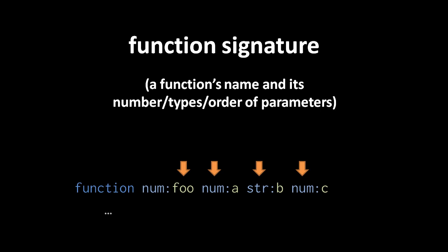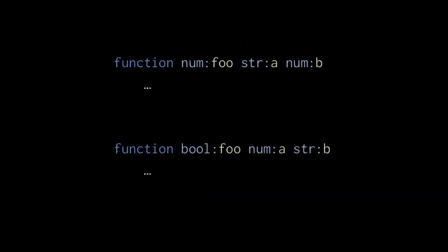Obviously then, we can't have multiple functions with the same signature, because then the compiler interpreter wouldn't be able to distinguish between calls to those functions. Notice that we said a function's order of its parameter types is part of its signature. What this means is we can have functions with signatures that only differ by the order of their types. For instance, a function foo with a string parameter followed by a number parameter has a different signature than a function foo with a number parameter followed by a string parameter.